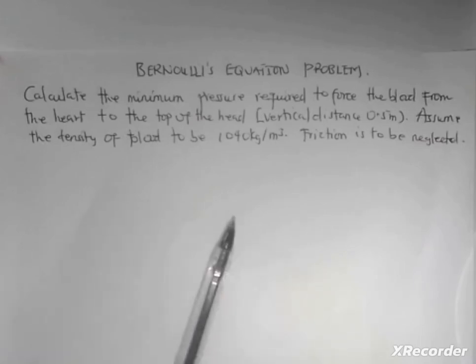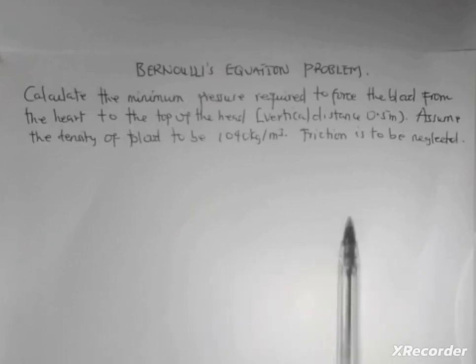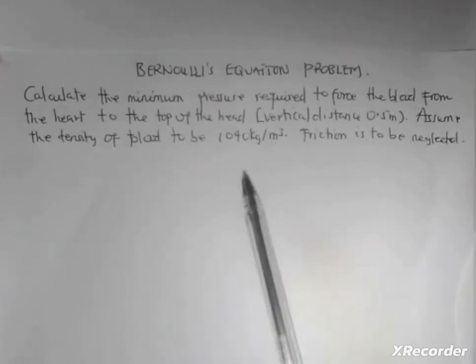Calculate the minimum pressure required to force blood from the heart to the top of the head. The vertical distance is 0.5 meters and assume the density of blood to be 1040 kilogram per meter cubed. Friction is to be neglected.